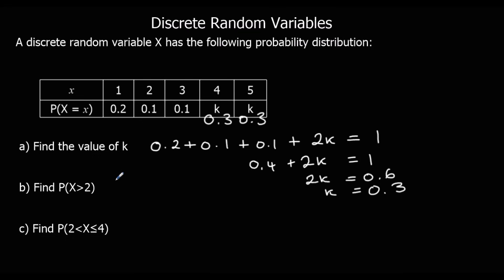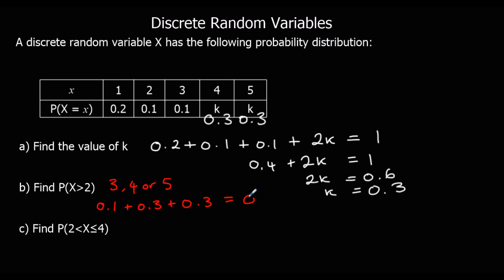Find the probability that x is bigger than 2 — it can't equal 2, it's got to be strictly bigger. So that means it could be 3, 4 or 5, giving us 0.1 plus 0.3 plus 0.3, which gives us 0.7. So the probability that x is bigger than 2 is 0.7.